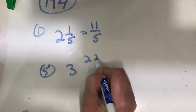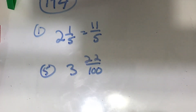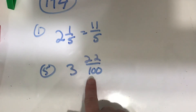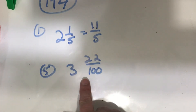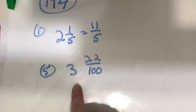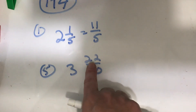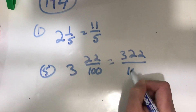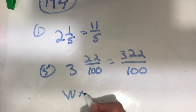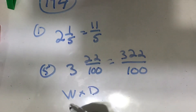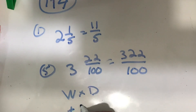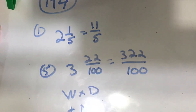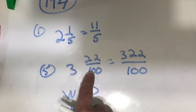Number five: three and twenty-two one-hundredths. That would be way too big to draw a model for. So I know that I have three wholes, each whole has one-hundred hundredths. So one hundred times three would be three hundred hundredths, plus twenty-two, would make three-hundred twenty-two one-hundredths. Remember: whole number times denominator, and then plus your numerator. The denominator does not change — it will stay the same.